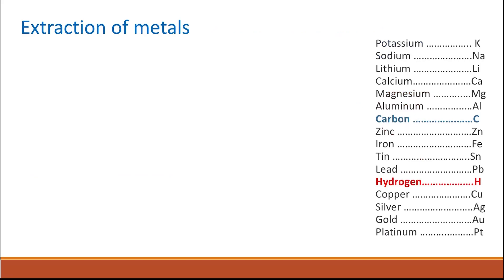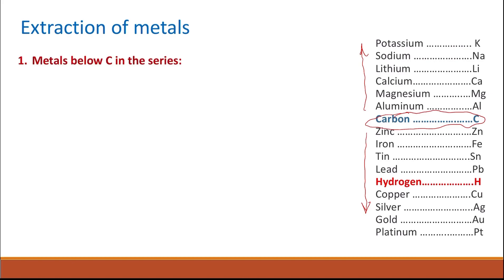The method of extracting a metal will depend on its position in the reactivity series. Carbon, which is a non-metal, can also be found in the reactivity series. All metals above carbon are more reactive than carbon, while metals below carbon are less reactive than carbon. The position of the metal in the reactivity series determines the method of its extraction.